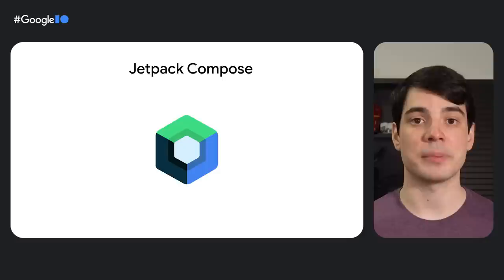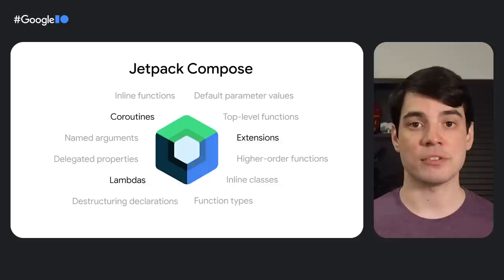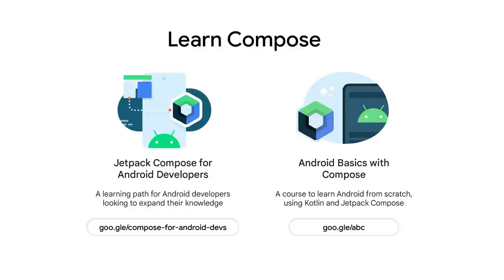We can't talk about Kotlin without mentioning Jetpack Compose, our modern toolkit for building UI across all form factors of Android, and our greatest commitment to Kotlin so far. Compose has been built with Kotlin from the ground up, and it makes great use of many of its language features, such as coroutines, lambdas, and extensions. It also wouldn't be possible without Kotlin's rich compiler API, which allows us to generate all the logic related to Compose's state management for you. If you're looking to get started with Compose, we have a Jetpack Compose for Android developers course. And our full Android Basics with Compose course is also available now for those looking to learn Kotlin, Android, and Compose from scratch.